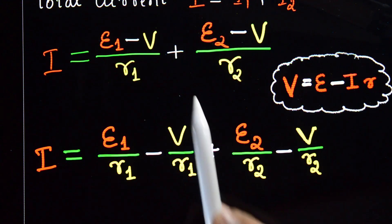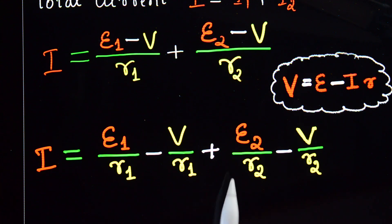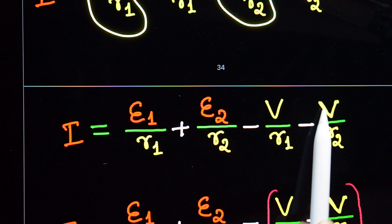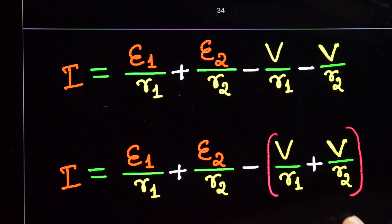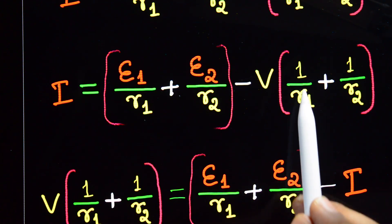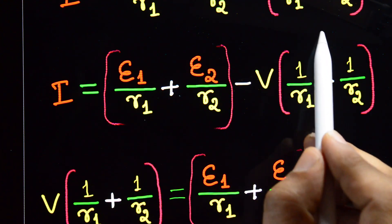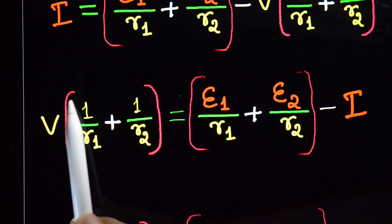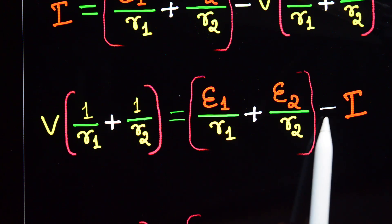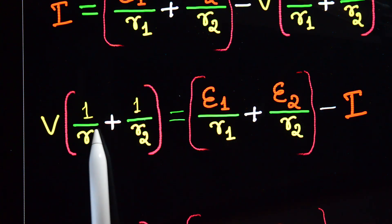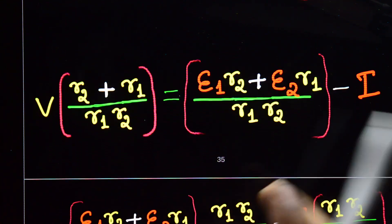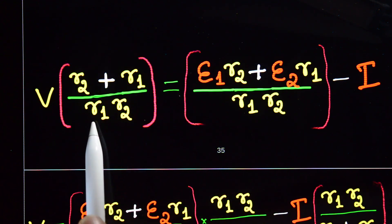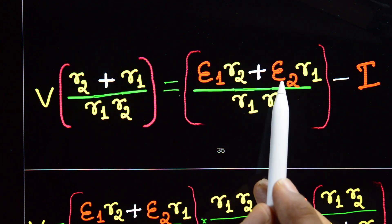Expanding: i = e1/r1 - v/r1 + e2/r2 - v/r2. Grouping: i = e1/r1 + e2/r2 - v·(1/r1 + 1/r2). Rearranging: v·(1/r1 + 1/r2) = e1/r1 + e2/r2 - i. Cross-multiplying: v = (e1·r2 + e2·r1)/(r1·r2) · (r1·r2)/(r2 + r1) - i·(r1·r2)/(r2 + r1). After cancellation, v = (e1·r2 + e2·r1)/(r2 + r1) - i·(r1·r2)/(r2 + r1).